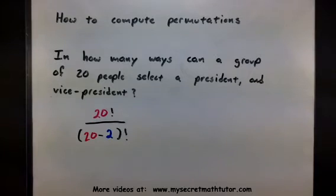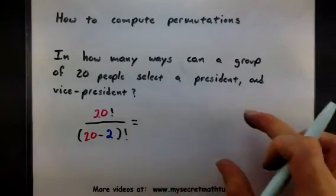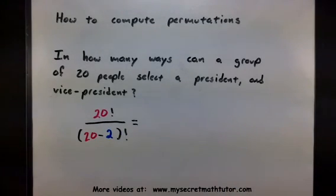Basically, we have to simplify this: 20 factorial divided by 20 minus 2 factorial. Now you could punch this into a calculator or even expand all of this out and figure out what 20 factorial is. But it's much easier to expand and cancel terms. Let's see why this is.